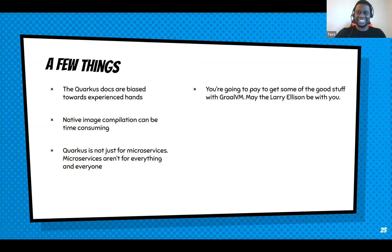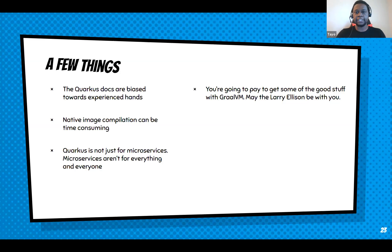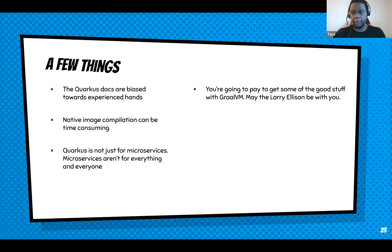I fully expect the commercial licensing to change over the coming years because this is the future of Java. Red Hat has promised to take their own fork of GraalVM and support it for the open-source community. For 80–85% of adopters of GraalVM and Quarkus you probably won't be dealing with license issues anyway — it works out of the box.